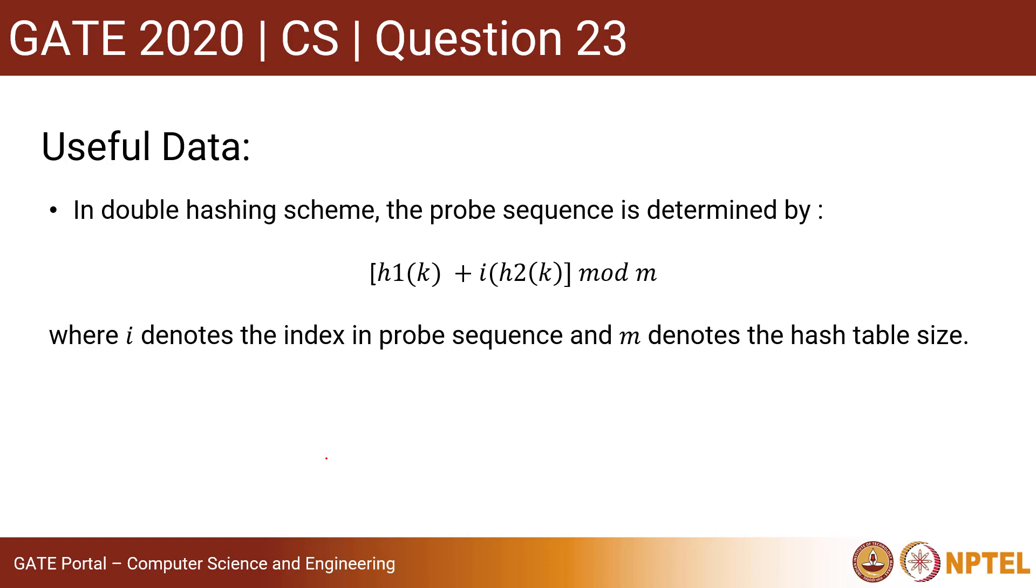Some useful data to solve the question: In double hashing scheme, the probe sequence is determined by this expression: [h1(k) + i·h2(k)] mod m, where i denotes the index in the probe sequence and m denotes the hash table size.